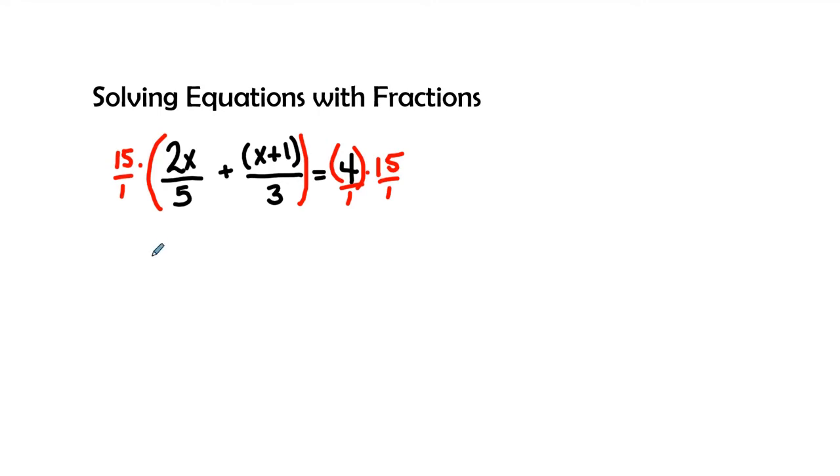Here we go: 15 times 2x becomes 15 times the 2x. I'm going to add this step in here for beginners so you guys can see what we're doing when we do the distributive property. 15 times 2x, and then when we go ahead and distribute the second term, plus 15 times the quantity of x plus 1 all over 3. And 4 times 15 is 60.